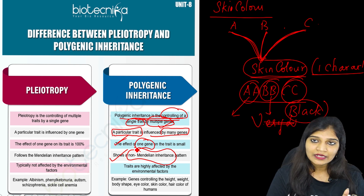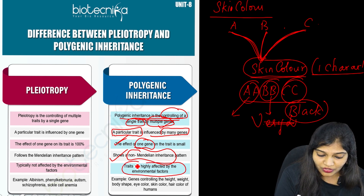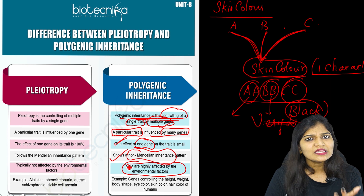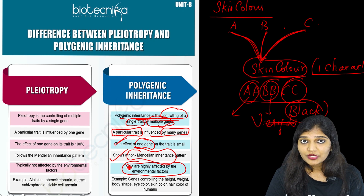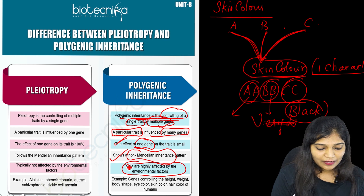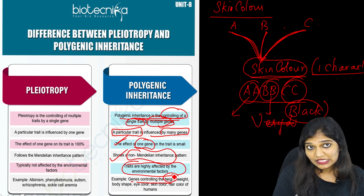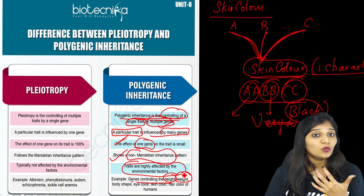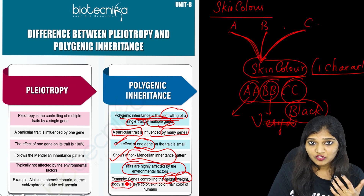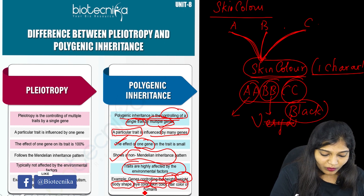It does not follow Mendelian inheritance pattern — it is non-Mendelian. Importantly, this trait is influenced by environmental factors. Skin color is determined based on environmental factors, unlike pleiotropy which is not affected by environmental factors. Examples of polygenic inheritance include genes controlling height, weight, body type, eye color, skin color, and hair color in humans.